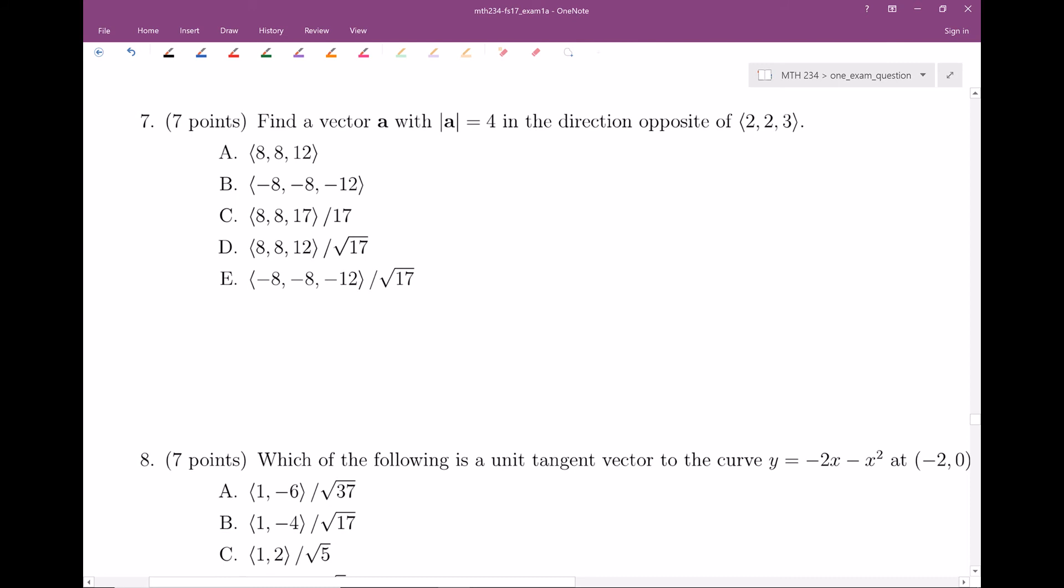Find a vector A that has a magnitude of 4 in the direction opposite of <2, 2, 3>.